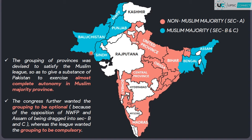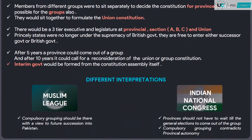This grouping of provinces was basically done to satisfy the Muslim League, because the Muslim majority provinces would have almost complete autonomy, giving them the feeling that a separate Pakistan had been created. But Congress wanted this grouping to be an optional feature, not compulsory. This was because North West Frontier Province and Assam felt they were dragged into Sections B and C respectively. Muslim League, on the other hand, wanted the grouping to be compulsory.